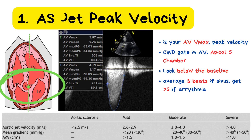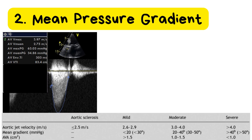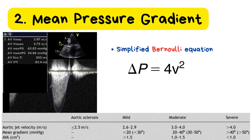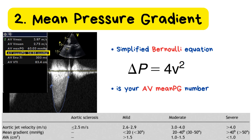Let's continue with how to interpret the next parameter: mean pressure gradient. This gives us another important clue about severity and is derived from the simplified Bernoulli equation, which states that the pressure gradient across a valve equals 4 times the velocity squared. As blood flow velocity increases due to a narrowed valve, the pressure difference across that valve also rises. The machine calculates this for us — what you'll look for is the AV mean PG, meaning aortic valve mean pressure gradient. In my patient's echo results, the AV mean PG is 34.86 mmHg, which falls between 20 and 40 mmHg — the moderate aortic stenosis category — confirming moderate AS by both peak velocity and mean pressure gradient.